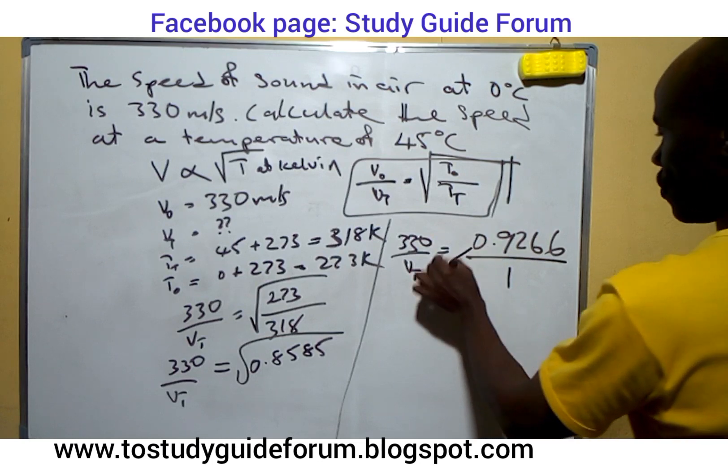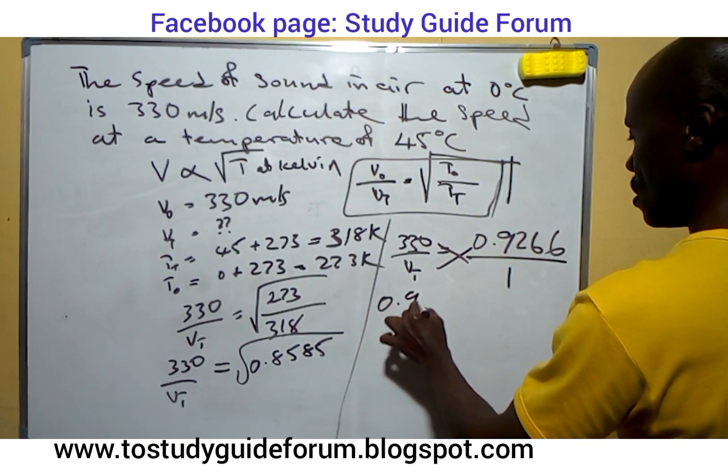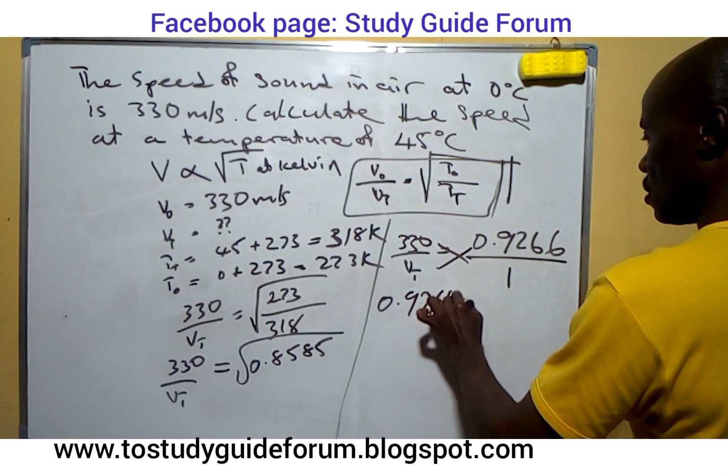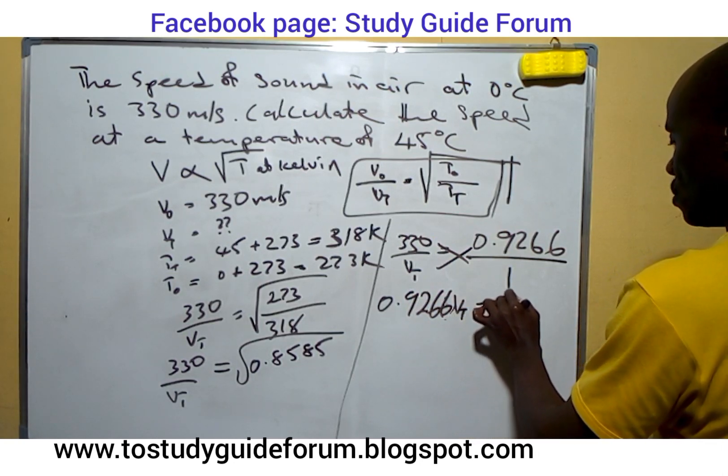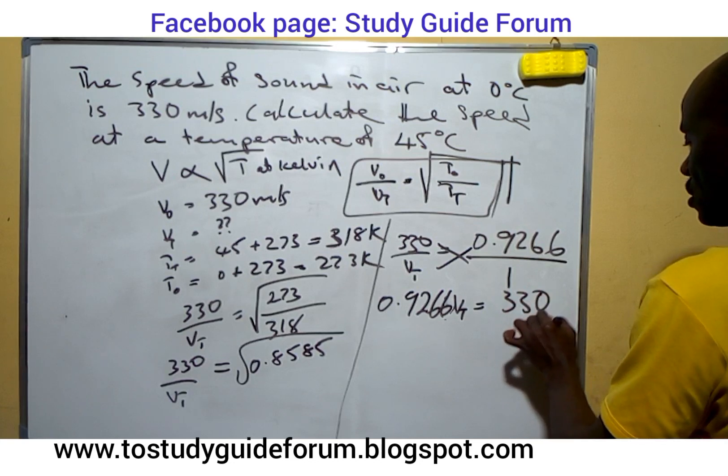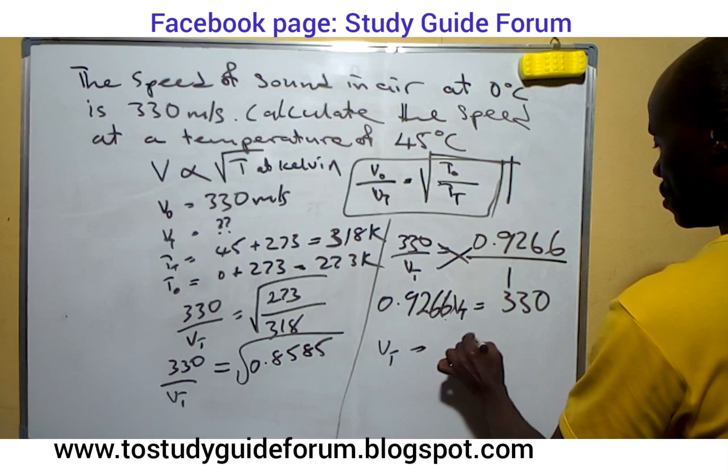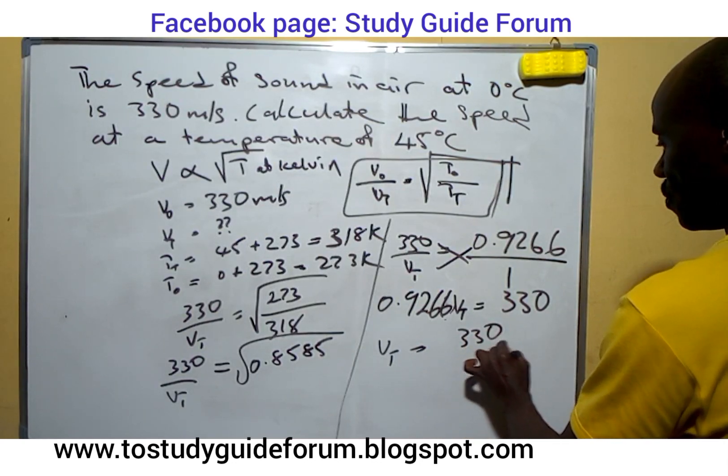So if we cross multiply, we'll have 0.9266 times Vt equal to 330. So Vt will give us 330 divided by 0.9266.